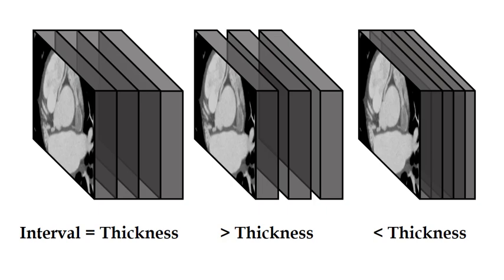In the last image, this is a situation where the slice interval is actually less than the slice thickness. So this means that the next slice begins before the previous slice ends. This results in overlapping in the reconstructed data. The benefit to this is increased spatial resolution and image quality, especially in reformatted images.